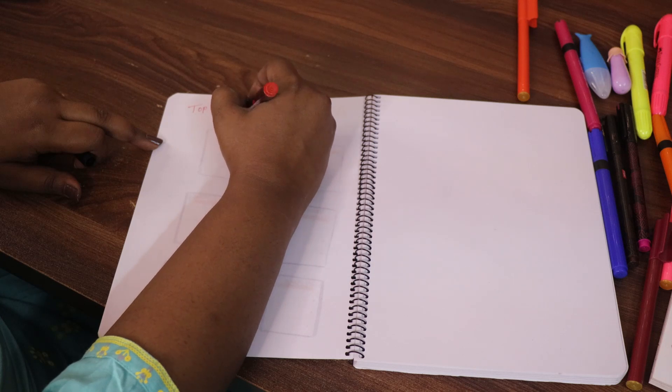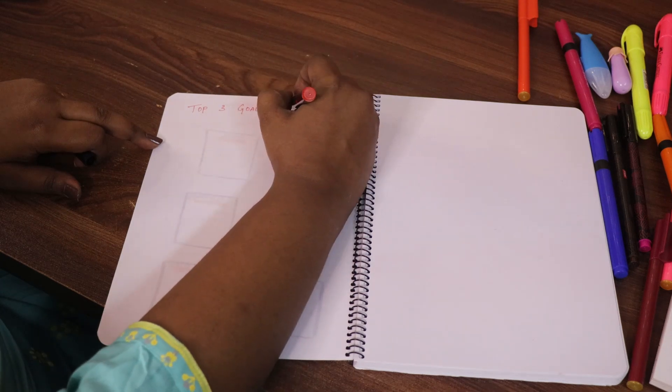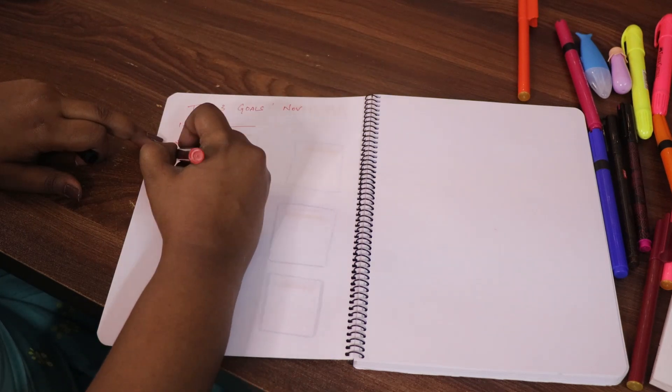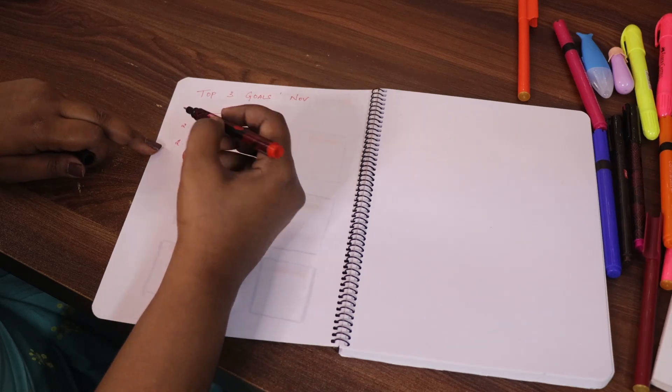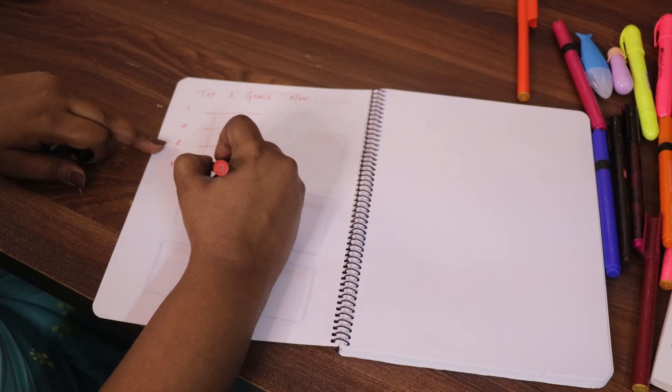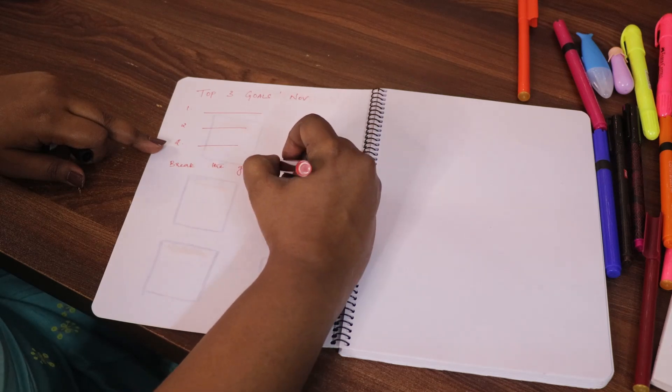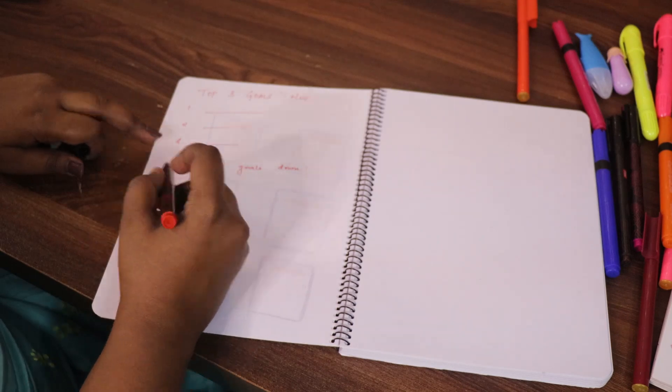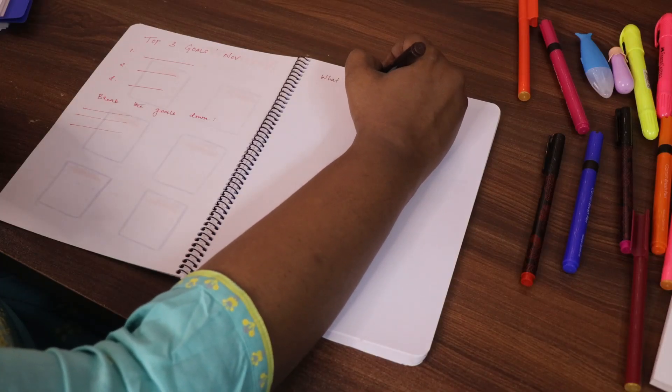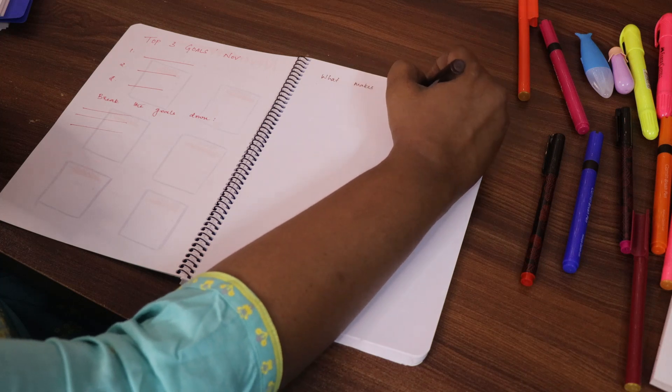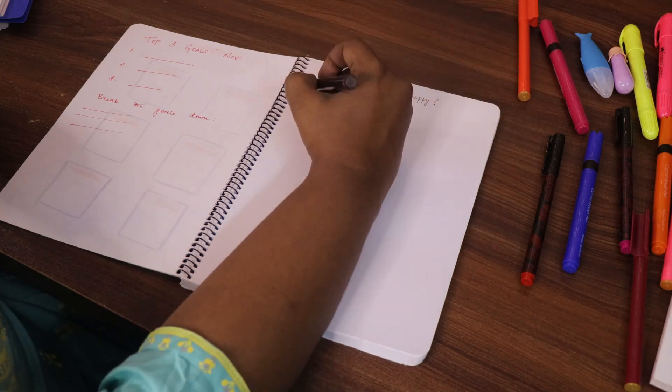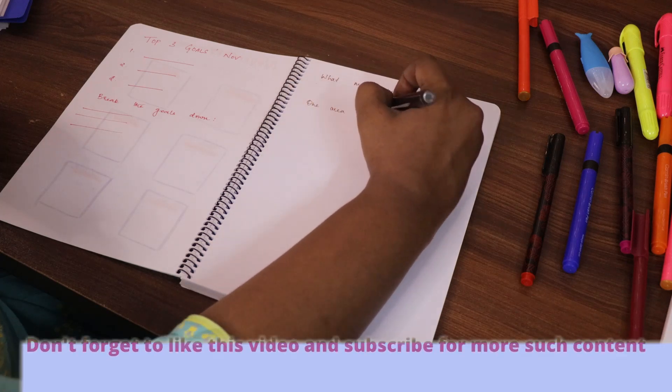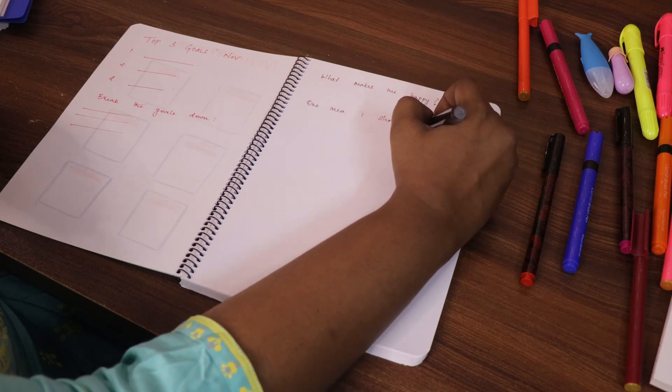Now once that process is done, take a fresh page and start writing your top three goals overall - what are the top three goals you have for November? Break those goals down. Take each goal and write down all the small tasks you should be doing to complete that goal. Once you complete and break the goals for all three important goals you've set for yourself that month, then we can move on to the next process.